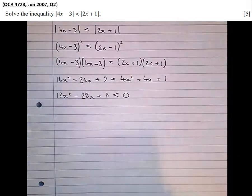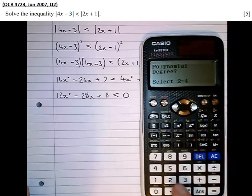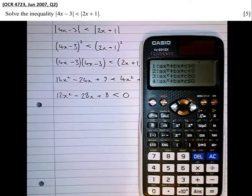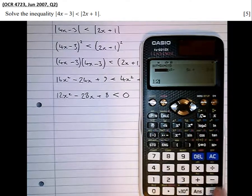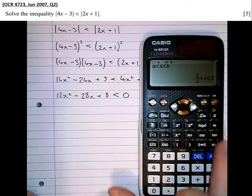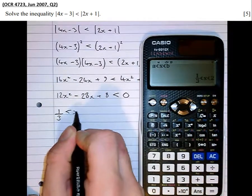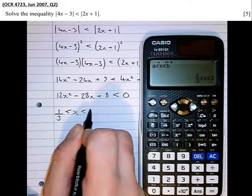And now for the calculator. We've put the calculator into inequality mode. It's a polynomial of degree 2, a quadratic, and it's a less than 0 quadratic, so we've got to choose option 2 here. Entering 12, minus 28, 8 — that tells us a third is less than x, which is less than 2. So the answer is one third is less than x, which is less than 2.